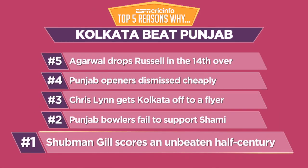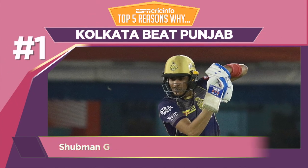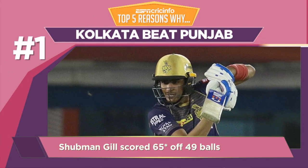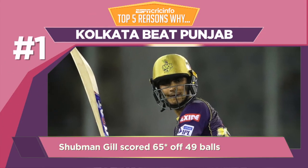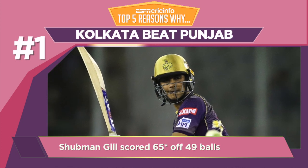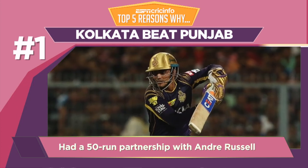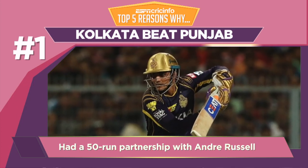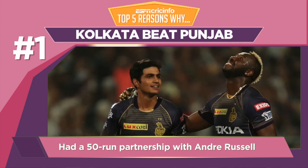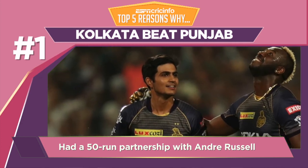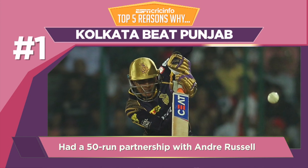Reason number 1: Shubhman Gill scores an unbeaten half-century. Following his 76 against Mumbai, Shubhman Gill scored another half-century on Friday night to guide his team to victory. He took minimal risks and remained unbeaten through the innings, as the other Kolkata batsmen batted around Gill as he held the chase together.